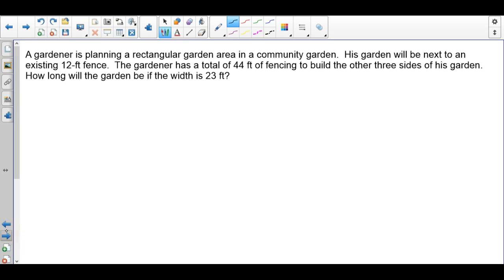This can also be applied to word problems. Let's say a gardener is planning a rectangular garden area in a community garden. His garden will be next to an existing 12-foot fence. We know we already have a 12-foot fence and that we're going to make a rectangle with it. The gardener has a total of 44 feet of fencing to build the other three sides of his garden. How long will the garden be if the width is that 12 feet of the existing fence?